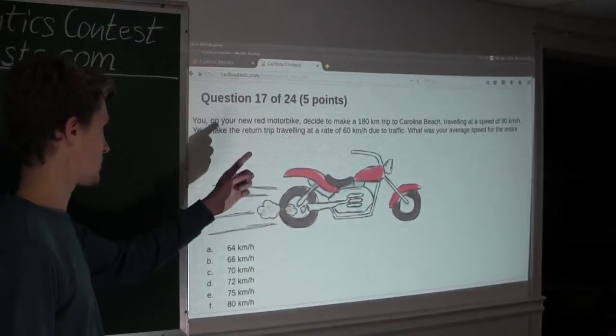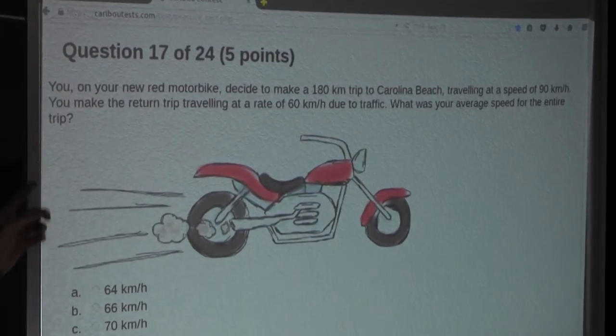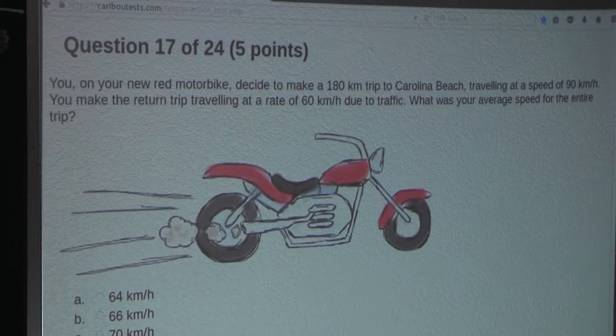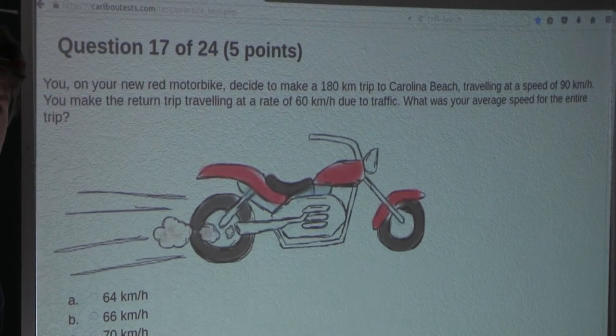Now let's look at the question. It says you decide to make a 180 km trip to the beach, and you are traveling at a speed of 90 km per hour.